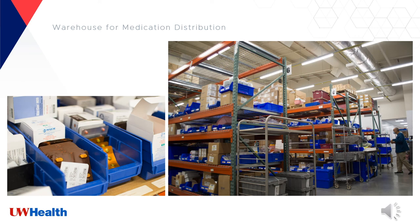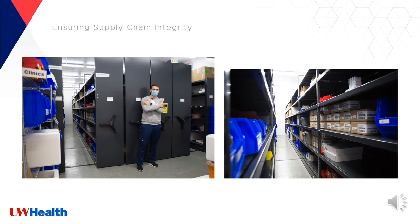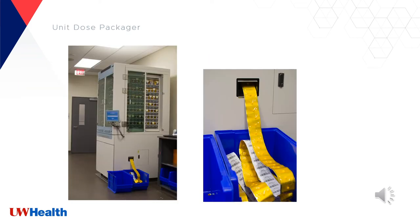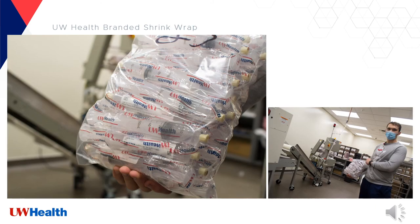Here is our warehouse for medication distribution. Within the warehouse, there are plenty of different medications stored that are ready to be delivered to the main campus when supplies are low. The integrity of our medications is important as they move throughout our supply chain — UW Health has state-of-the-art coolers made custom from a restaurant fridge supply company in Madison. This is our unit dose packager for frequently used medications; after packaging, these are delivered to the main campus for inpatient use. Within the warehouse, we also prepare unit dose preparations such as oral suspensions and solutions. As a last fun fact, we have used UW Health branded shrink wrap.